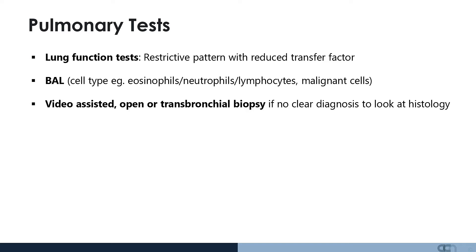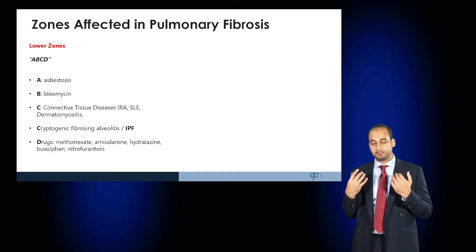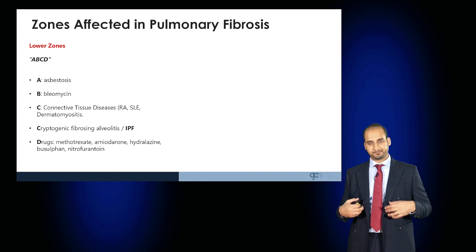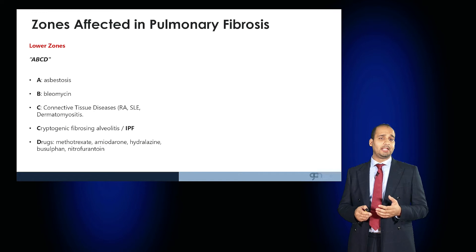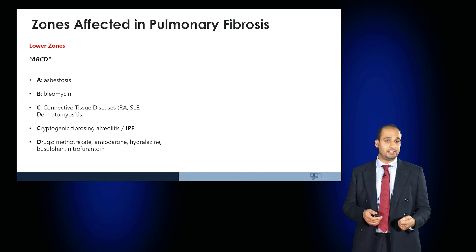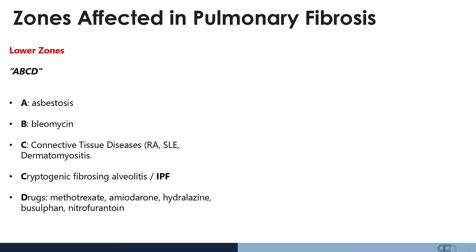Fibrosis can occur in the lower zones, upper zones, or throughout the lungs. For lower zone fibrosis, the mnemonic ABCD is useful: asbestosis, bleomycin, connective tissue diseases such as rheumatoid arthritis or systemic lupus erythematosus, dermatomyositis, and cryptogenic fibrosing alveolitis all result in lower zone fibrosis. Other drugs such as methotrexate, amiodarone, hydralazine, and nitrofurantoin also result in lower zone fibrosis.